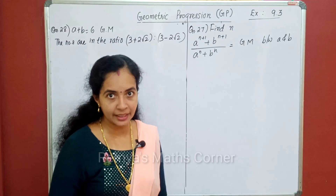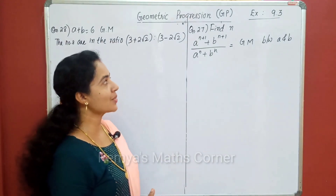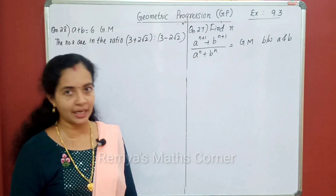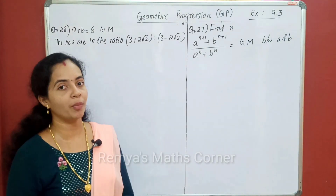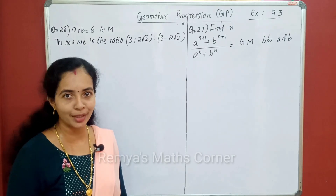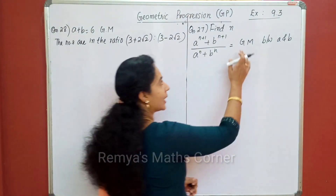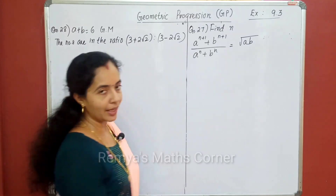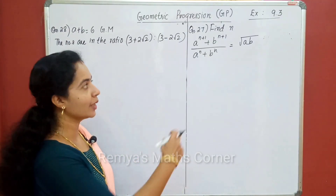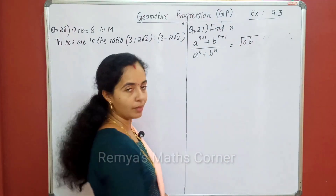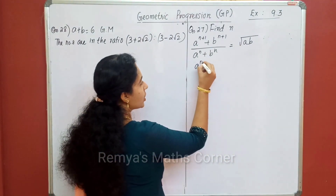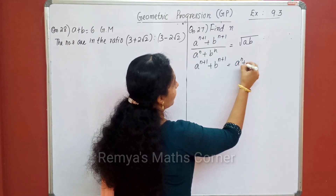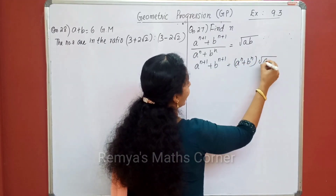In the 27th question, the condition is: a raised to n plus 1, plus b raised to n plus 1, divided by a raised to n plus b raised to n, is equal to the square root of ab. We call square root a, b. Here, a raised to n plus 1 plus b raised to n plus 1 equals a raised to n plus b raised to n, multiplied by root ab.